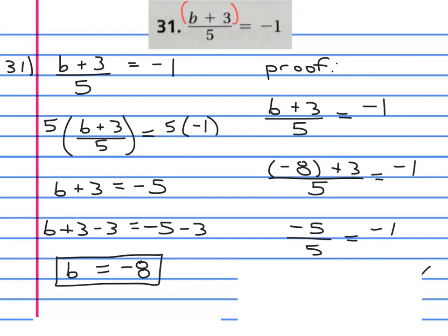Now we need to just simplify this. What's negative five divided by five? That's negative one. And since it says negative one on the other side as well, we give it a check mark.